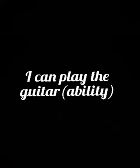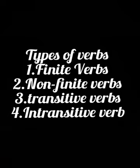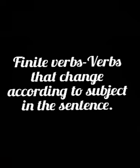Now there are some types of verbs: finite verbs, non-finite verbs, transitive verbs, and intransitive verbs — so there are basically four types of verbs. Verbs that change according to the subject in the sentence are called finite verbs. There are some verbs which change according to the subject of the sentence, and those verbs are known as finite verbs.